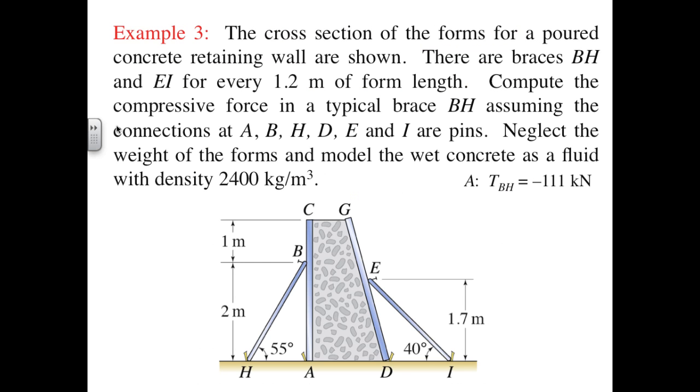This example involves the loads experienced by braces as poured concrete sets. We are treating the concrete as a fluid with mass density 2400 kg per cubic meter. We are told there are braces for every 1.2 meters of form length. This will enable us to treat this as a planar problem with span S equals 1.2 meters. We are also told to treat all the connections as pins, so there will be only force reactions, and BH and EI will both be two force members. In this first example, we will calculate the force carried by brace BH, and then look at brace EI in a subsequent example.